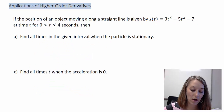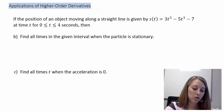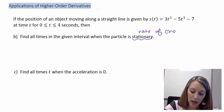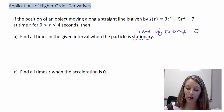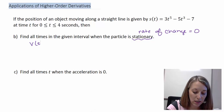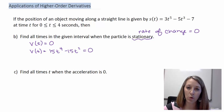In Part B, we want to know all times in the given interval when the particle is stationary. If something is stationary, its rate of change — the velocity — is 0. So we want to know when our velocity equation equals 0. Our velocity was 15t⁴ minus 15t², so we need to solve 15t⁴ minus 15t² equals 0.